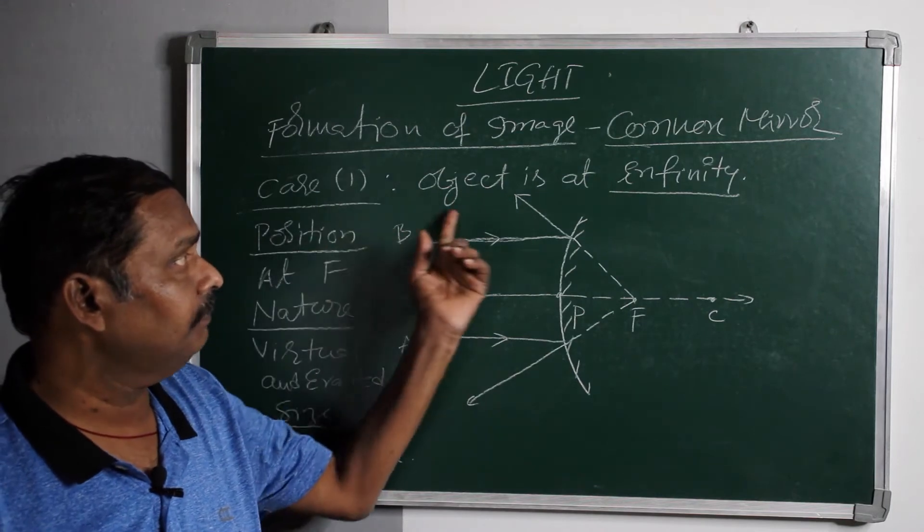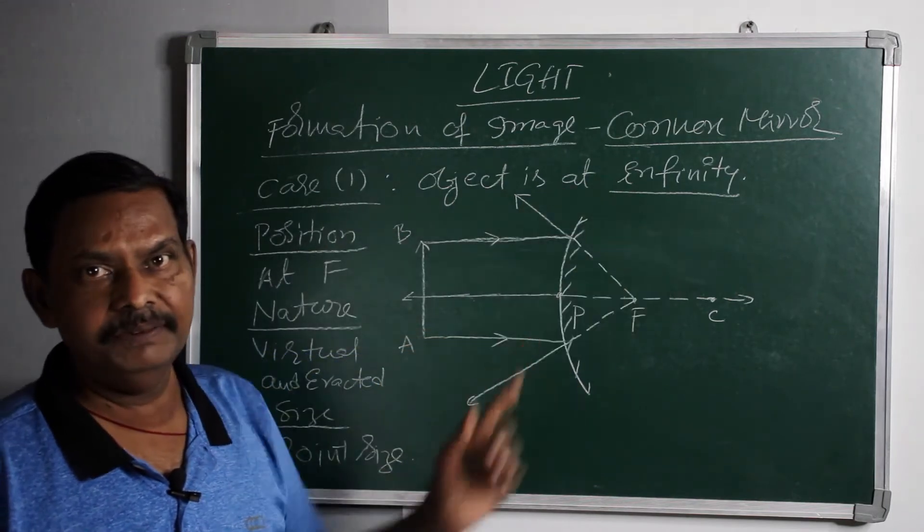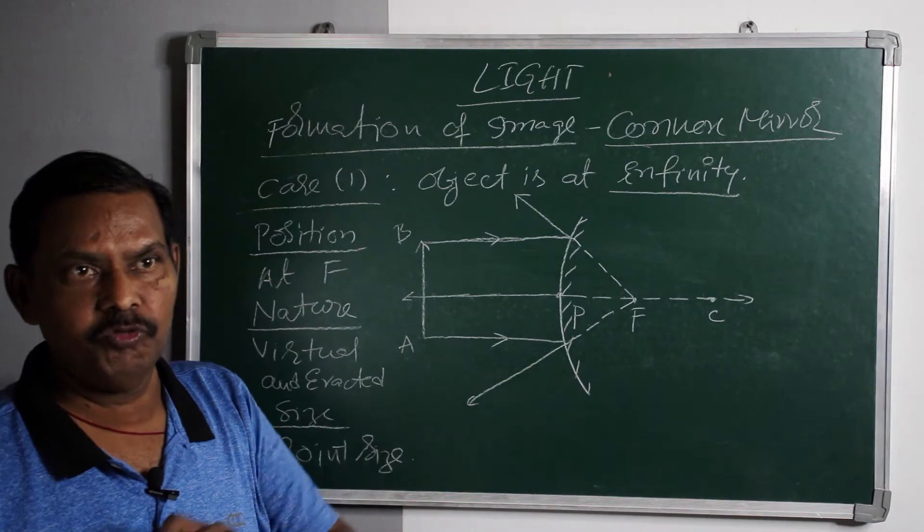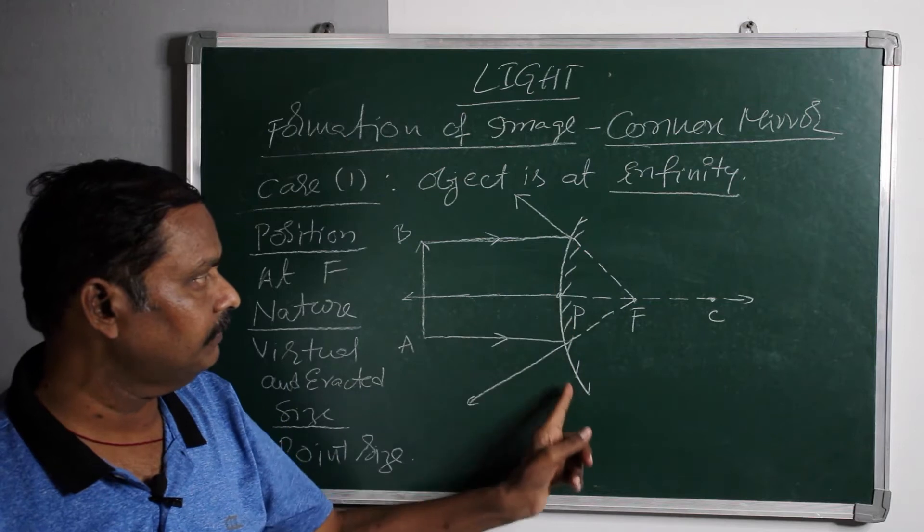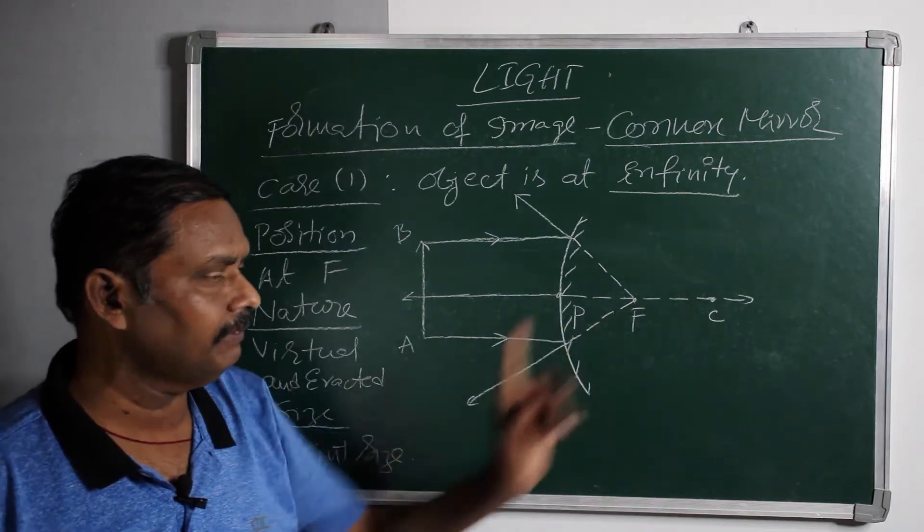Case one is object is at infinity. That means object is placed far off from the convex mirror. So this is the convex mirror, pole, focus and center of curvature.